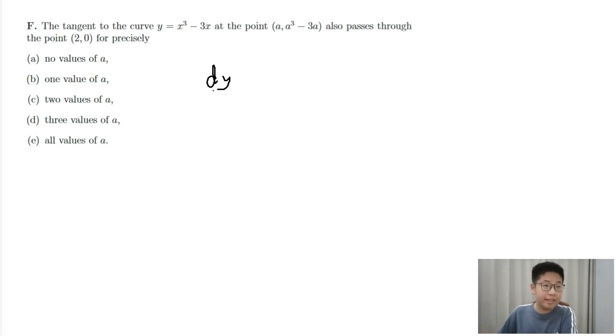The gradient on this curve at x equals a is 3x squared minus 3. Ignore the differentiation rules. Substituting a for x will give you 3a squared minus 3.